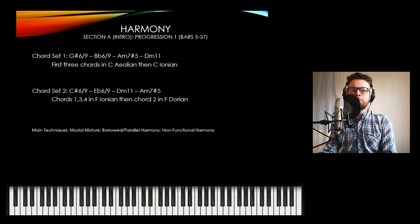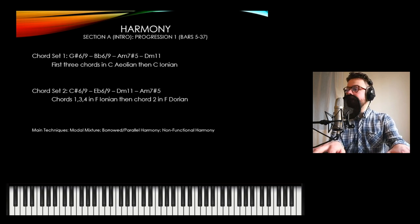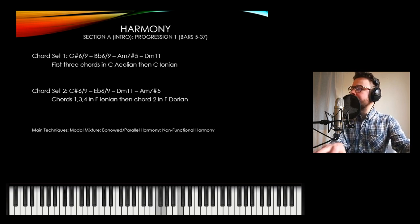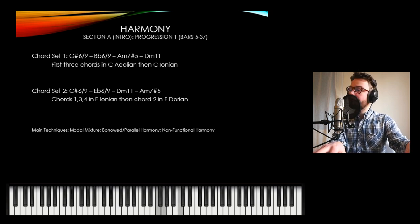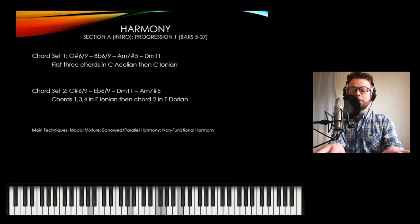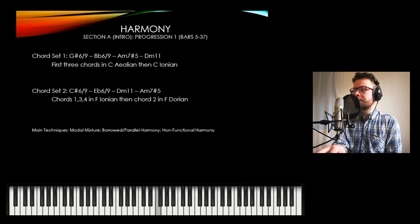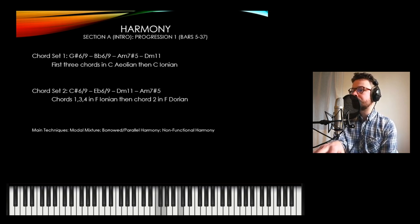To repeat that second set of the progression: we've ended the first progression with that D minor 11, and then we go down a semitone to a C sharp 6/9, an E flat 6/9, then down to the D minor 11 again, then up to the A minor 7 sharp 5, and then quite conveniently down a semitone to that G sharp 6/9. Please note the right-hand voicing here, which is essentially a triad of an F sus 2 or a C sus 4 — it's consistent throughout this progression.